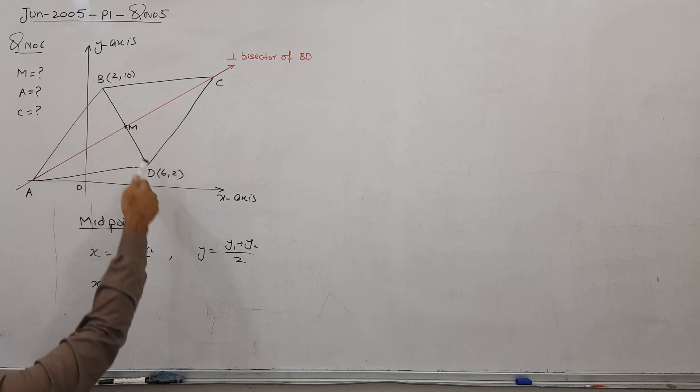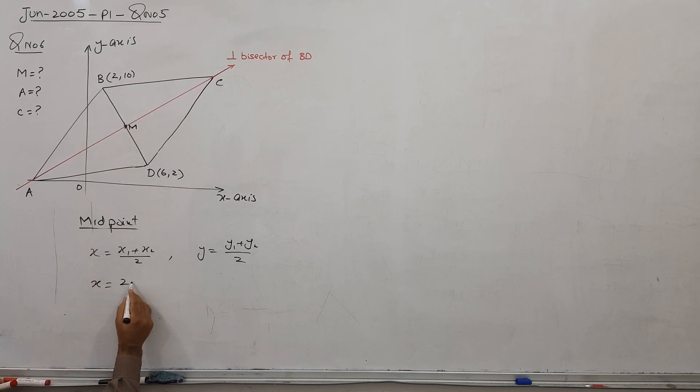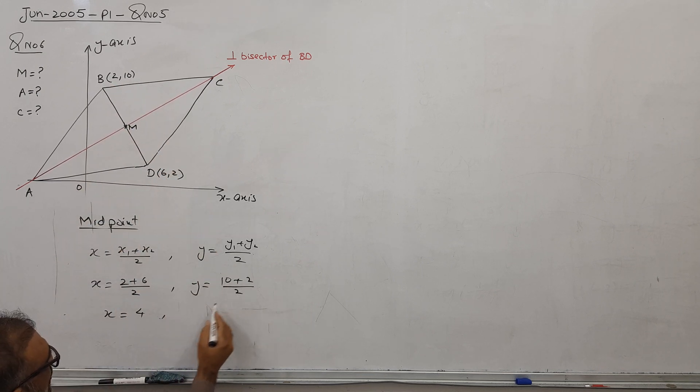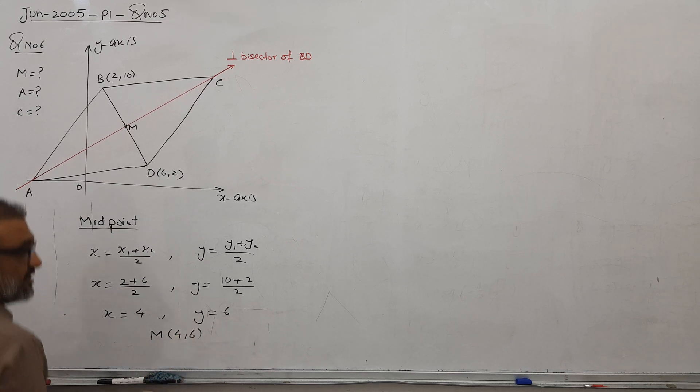X1 is 2 and this 6, X2. So 2 plus 6, 8 divided by 2, we got a 4. And what is a Y coordinate? 10 and 2. So 12 divided by 2, we got a 6. So it means I got a midpoint coordinate 4, 6. So first, the midpoint coordinate is okay.